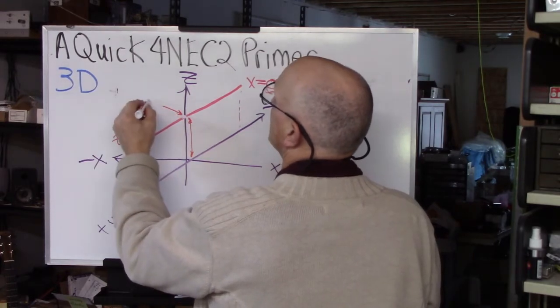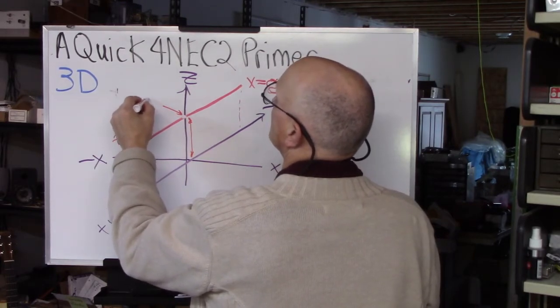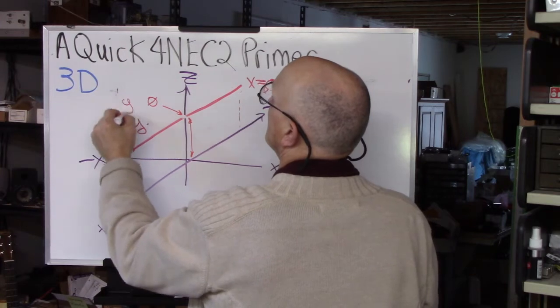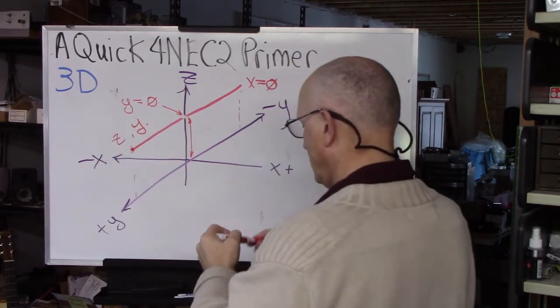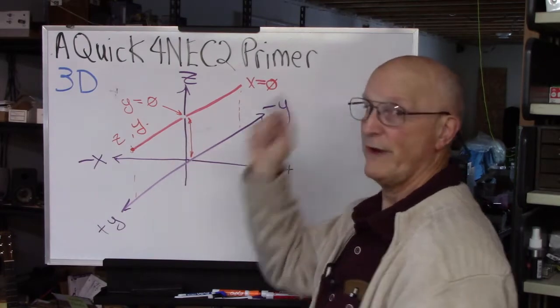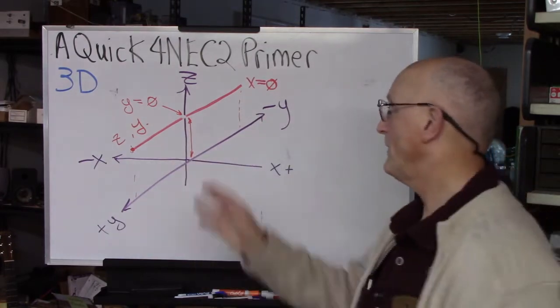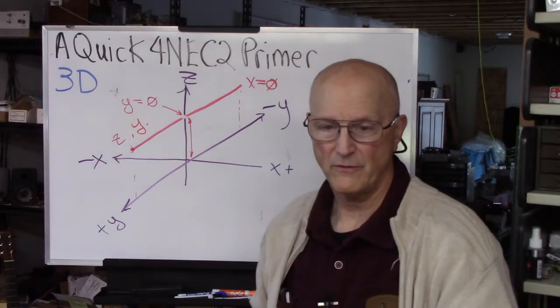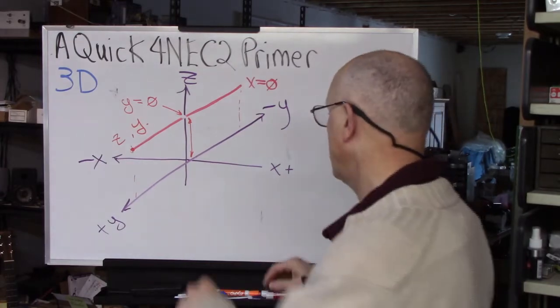So we try to put the antenna center at zero. So it extends an equal distance in each direction away from Y equals zero. Now the next thing that we have to remember